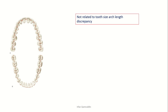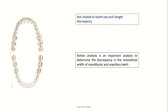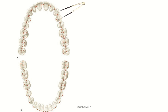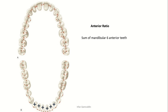Bolton analysis is not directly related to crowding and spacing in the arches. In fact, we compare the mesiodistal width of lower teeth with the mesiodistal width of upper teeth. You measure the mesiodistal width of each tooth from the first molar of one quadrant to the first molar of the other quadrant in the mandible and maxilla. For the anterior Bolton ratio, measure the mesiodistal width of the anterior six — canine to canine in the mandibular arch — divide by the sum of the maxillary anterior six, and multiply by 100 to get the anterior Bolton ratio percentage.